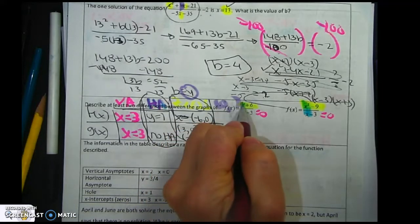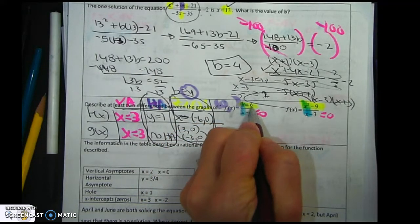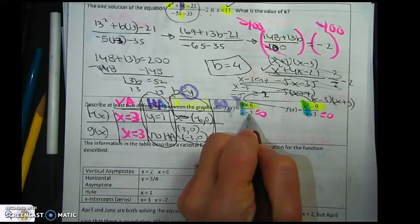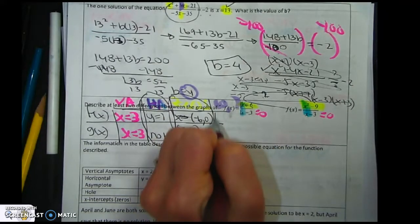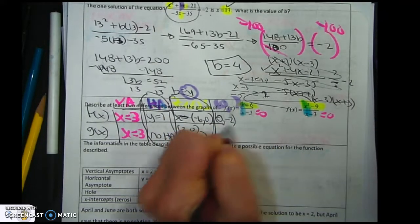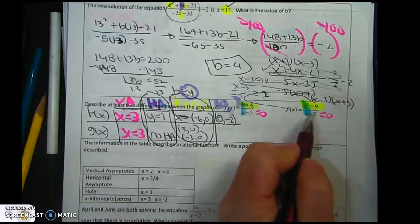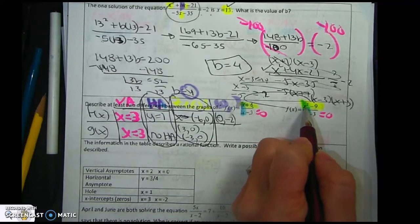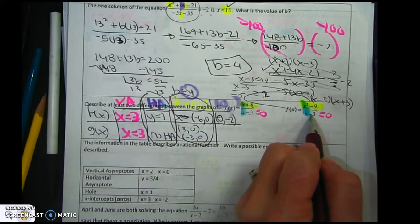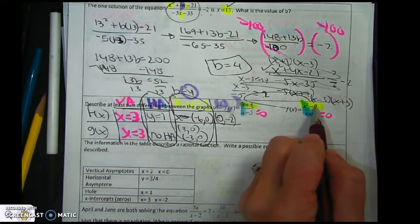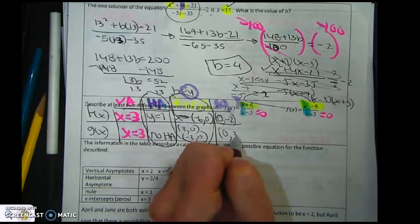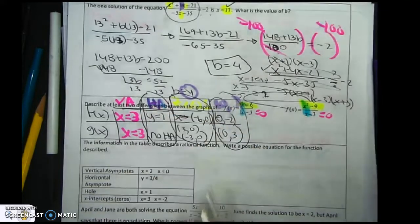So I'll plug in 0. So if I plug in 0, 0 plus 6 is 6. 0 minus 3 is negative 3. 6 divided by 3 is negative 2. So 0, negative 2 is my y-intercept. I plug in 0 here. 0 minus 9 is negative 9. 0 minus 3 is negative 3. Negative 9 divided by negative 3 is 3. There's another difference. You can get a bonus for that.